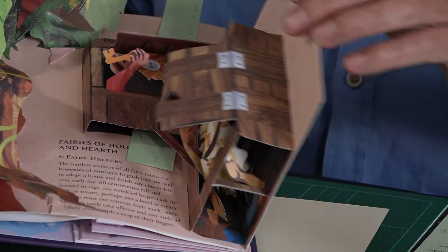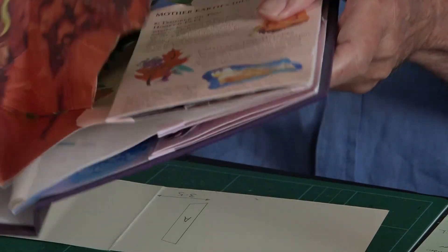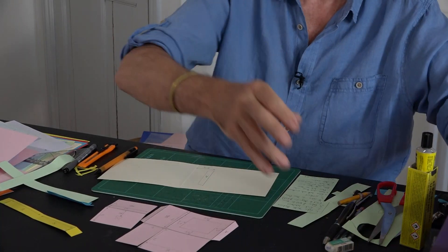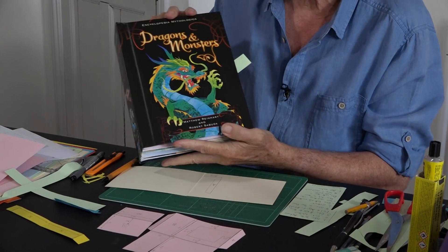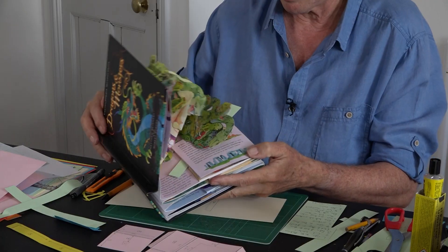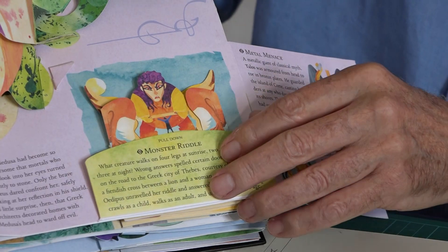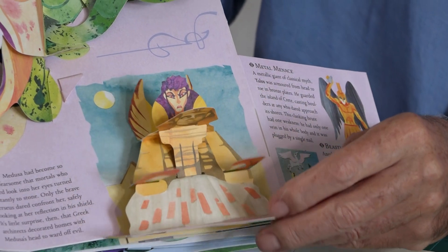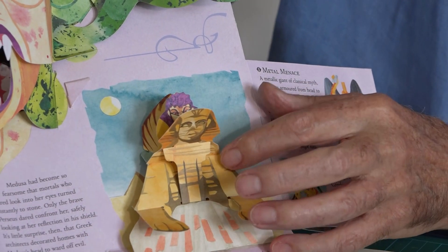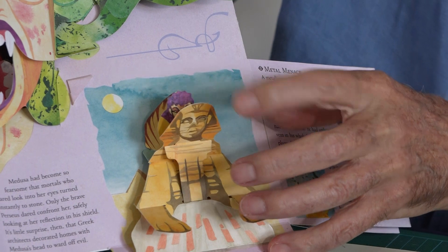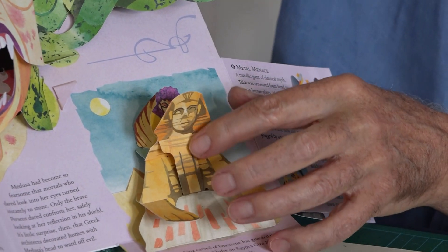The last one I want to show you is Dragons and Monsters, again by Matthew Reinhart and Robert Sabuda, those masters of the pop-up art. It's this little one here. This is a variation—this is the flap coming up, this is the strut that pushes up the flap.